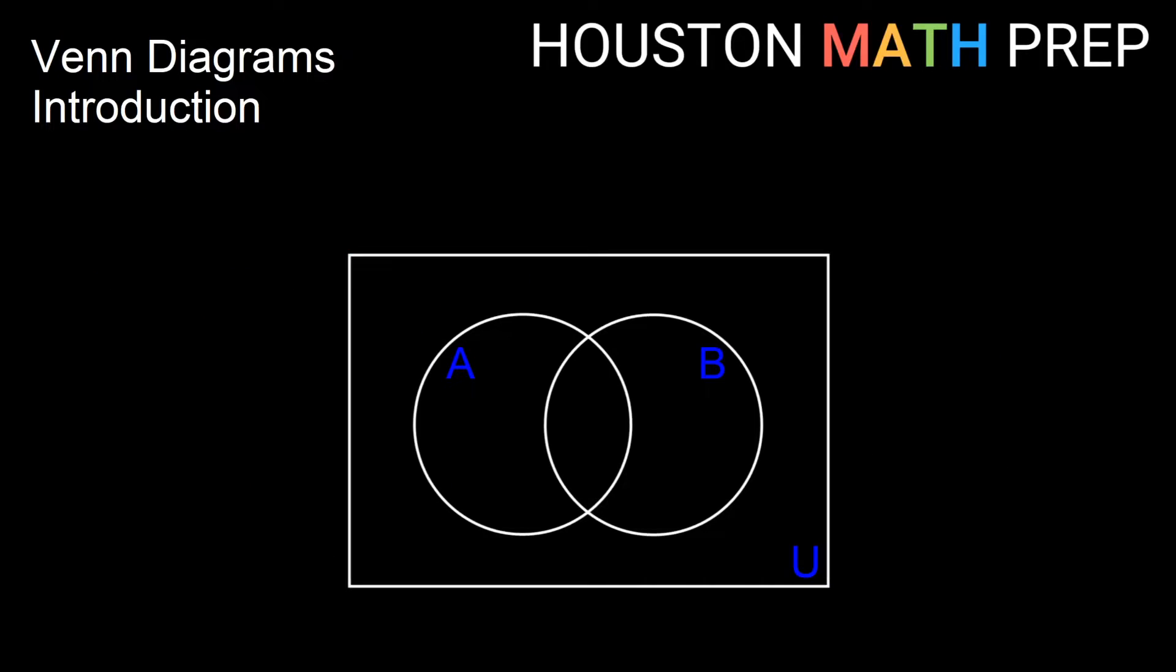If we want to think about how to picture some of our set operations in terms of Venn diagrams, if we want to picture what A intersect B looks like, A and B, we said that that would be where the two circles overlap. So that's the part of our Venn diagram that symbolizes A intersection B.